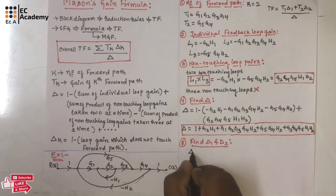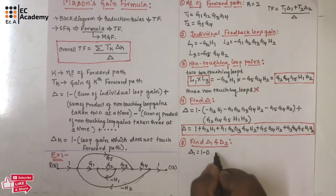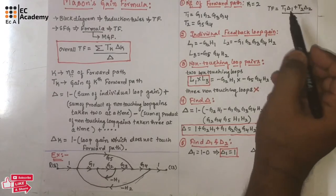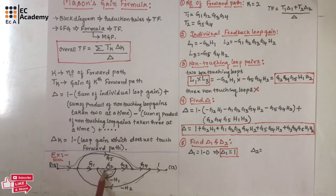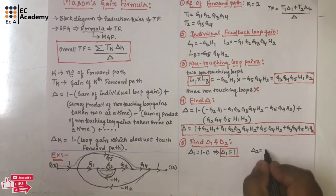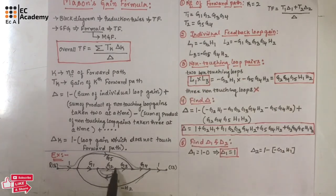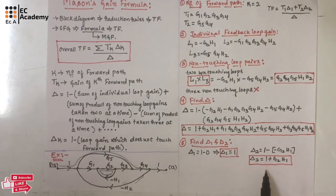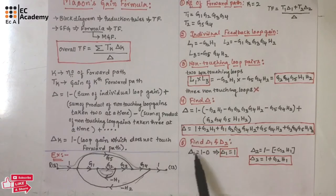Now let us find delta1 and delta2. For forward path T1, all loops are touching the path, so delta1 = 1 - 0 = 1. For forward path T2, loop L1 (which gives -g2*h1) does not touch T2. So delta2 = 1 - (-g2*h1) = 1 + g2*h1.